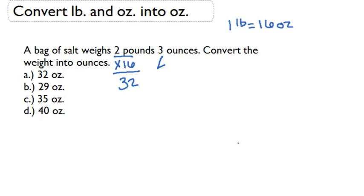Now we know we also have these other 3 ounces, so we're going to have to add those in. So I have 32 plus 3, which gives me 35 ounces.